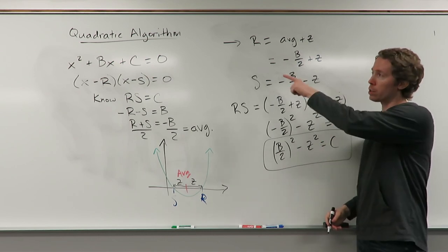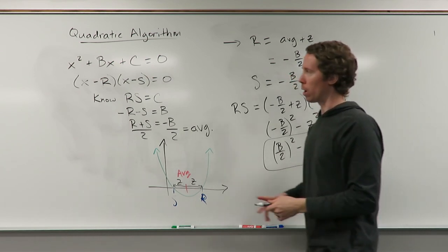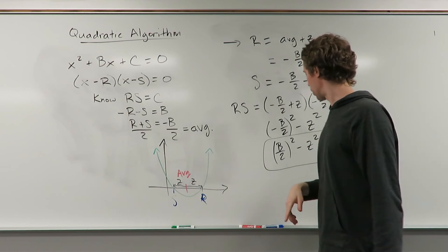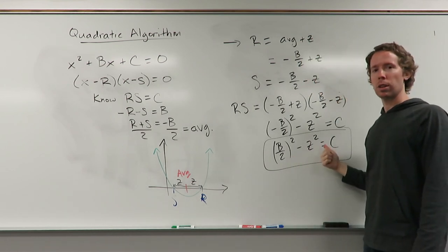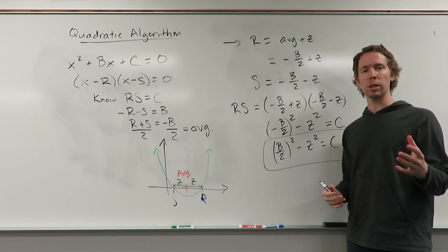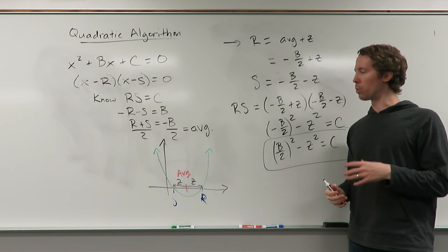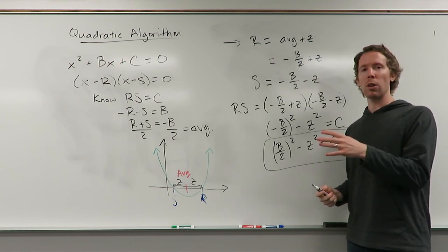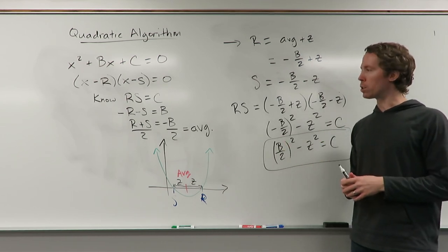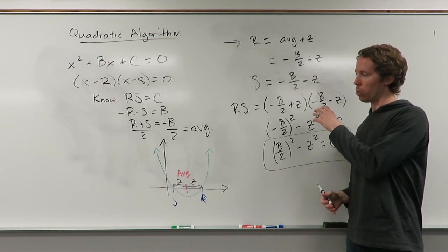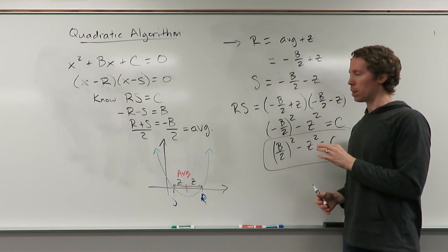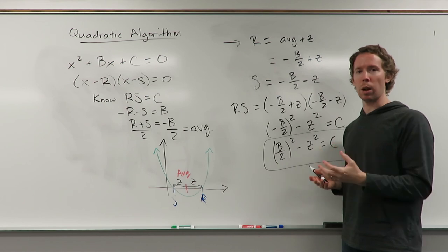So this is our algorithm. We first divide by whatever number is out in front of x squared, and then we use the B and C that are left over to solve for z here. In the next video, we're just going to look at some specific examples of how to work through that algorithm — we'll start simple and then get more complicated. And if you already know how to do the quadratic formula, feel free to compare going back and forth. But I really want you to take some time to think about why this works, because if you can understand why it works, it's going to help you build on that knowledge to do more complicated things.